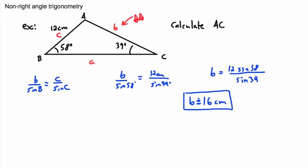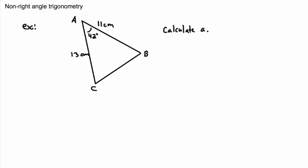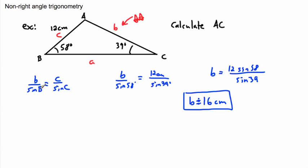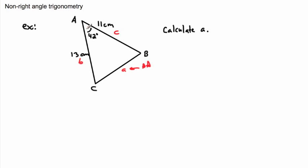Now let's do another example. Here I have triangle ABC with a side-angle-side setup, and I want to find side a. I check whether I can use sine law — I need an angle and its opposite side — but I don't have any matching pair. So I've got to use law of cosines.